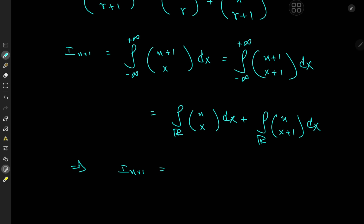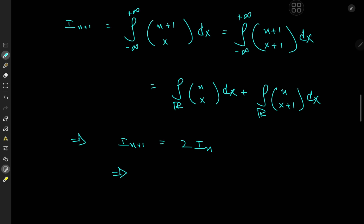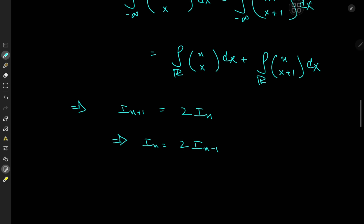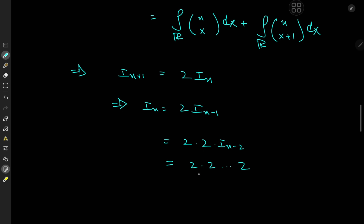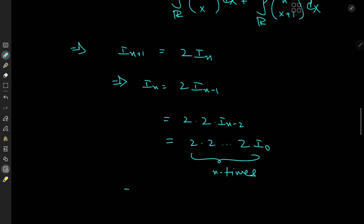So we have I_{n+1} = 2·I_n, or equivalently I_n = 2·I_{n−1}. Extending this further: 2·2·I_{n−2}, and so on, all the way down until we reach I_0. In other words, the target integral I_n is in fact 2^n times I_0.